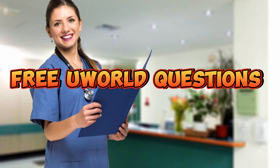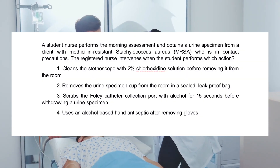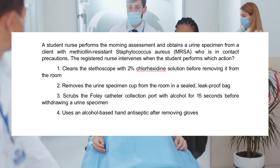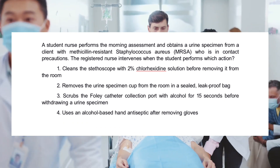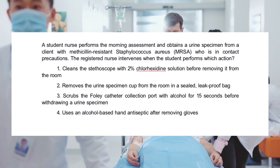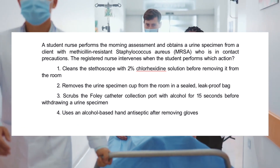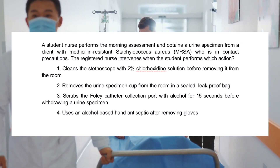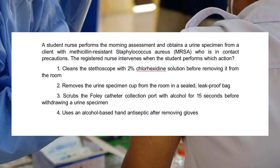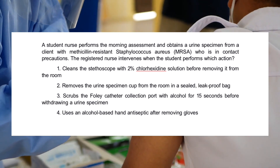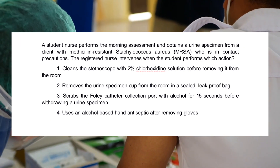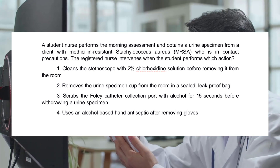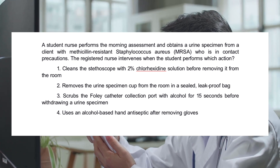Question 1: A student nurse performs the morning assessment and obtains a urine specimen from a client with methicillin-resistant Staphylococcus aureus (MRSA) who is in contact precautions. The registered nurse intervenes when the student performs which action? 1. Cleans the stethoscope with 2% chlorhexidine solution before removing it from the room. 2. Removes the urine specimen cup from the room in a sealed leak-proof bag. 3. Scrubs the Foley catheter collection port with alcohol for 15 seconds before withdrawing a urine specimen. 4. Uses an alcohol-based hand antiseptic after removing gloves.